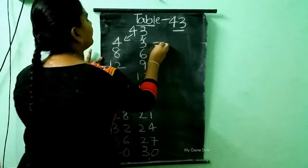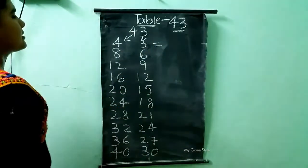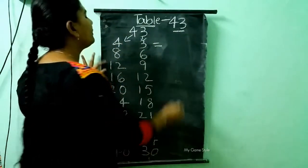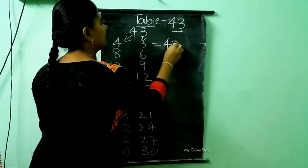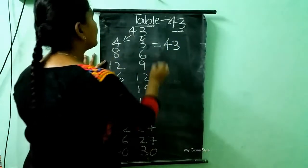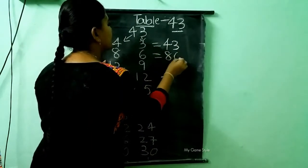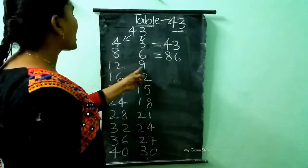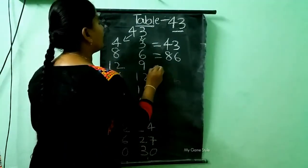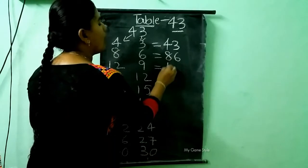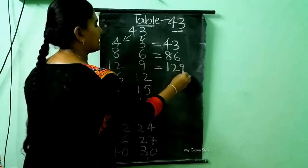Next we are combining these both numbers. Tell me children: 43, 43 and 86, 86 and 129 here.